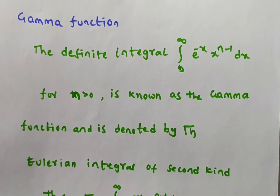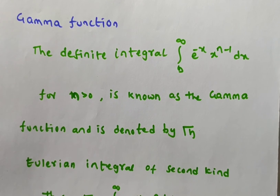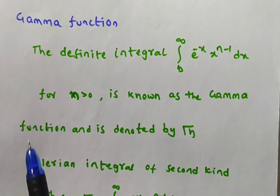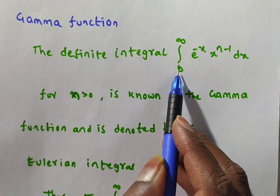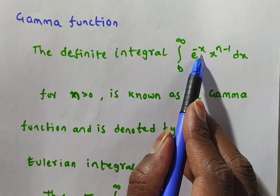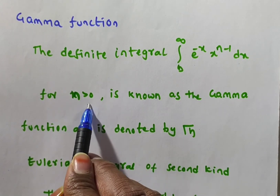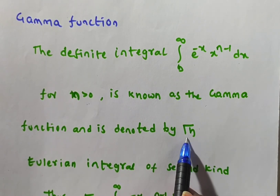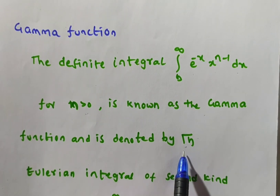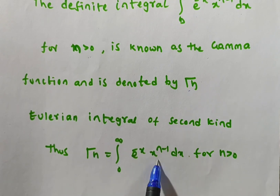The Gamma function is also a special function and is also a definite integral, like the Beta function. The definition of the Gamma function is: the definite integral from 0 to infinity of e^(-x) * x^(n-1) dx, for n greater than 0. This is known as the Gamma function and is denoted as Gamma(n). So we define Gamma(n) = integral from 0 to infinity of e^(-x) * x^(n-1) dx, for n > 0.